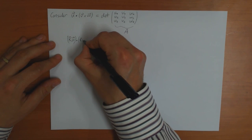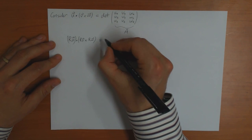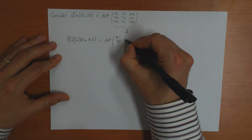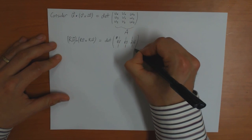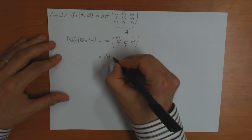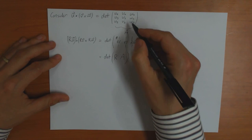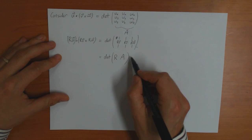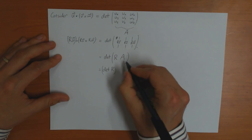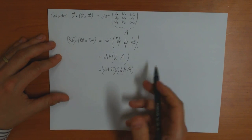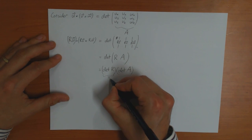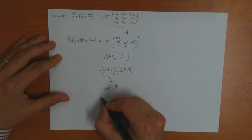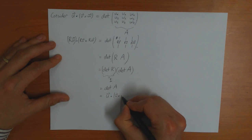Now consider the rotated version: R(U) · (R(V) cross R(W)). This equals the determinant of the matrix whose columns are R(U), R(V), and R(W), which equals the determinant of R times A. Using the result that the determinant of a product equals the product of the determinants, and knowing that a rotation has determinant equal to 1 (proved in the previous video), this equals det(A), which equals U · (V cross W).